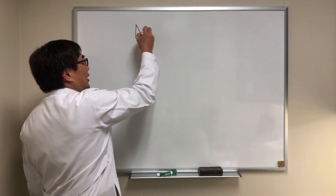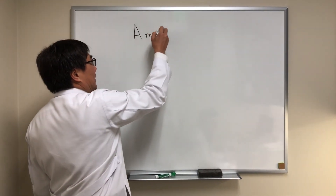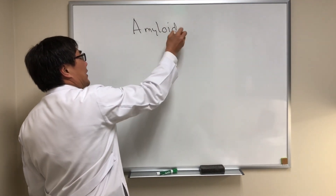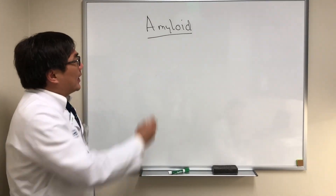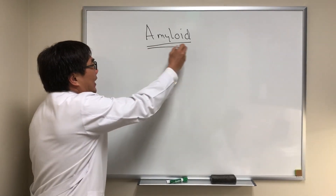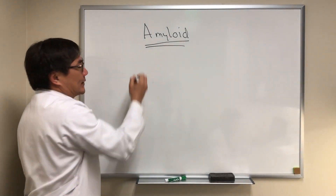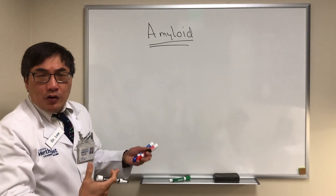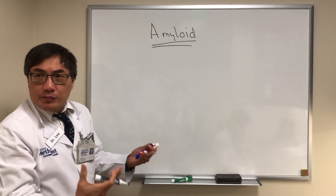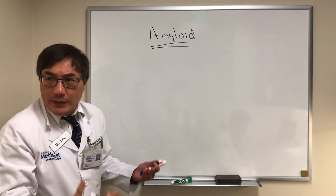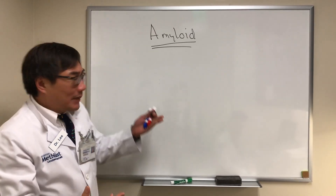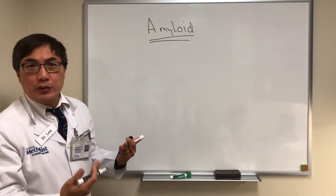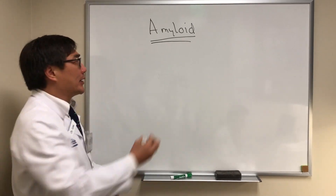Today we're going to talk about amyloid. Amyloid is very weird stuff, and a lot of things can become what we call amyloid. Over 30 different proteins — maybe more — have been identified that can become the amorphous extracellular material which we call amyloid.